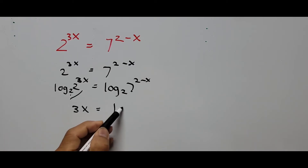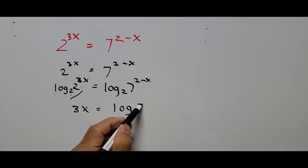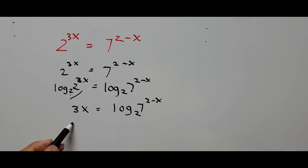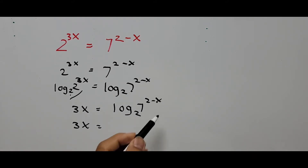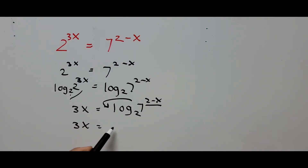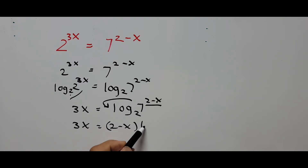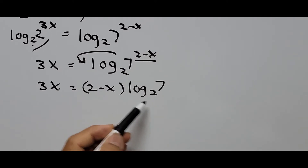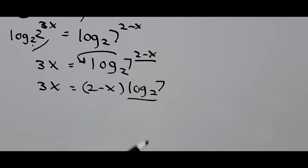So what we have now is 3x equals the logarithm of 7 raised to the 2 minus x, base 2. The exponent 2 minus x comes down to the front, so we have: 3x equals (2 minus x) multiplied by log base 2 of 7.